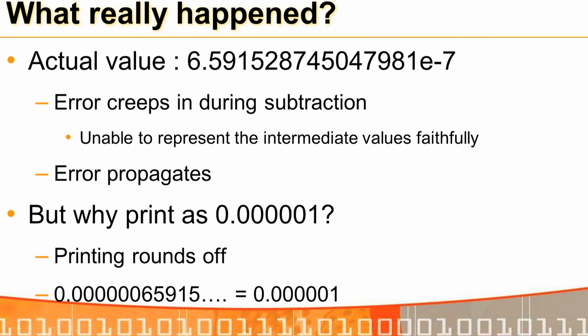Printf rounds the stored value: 0.06... rounds up to give 0.0000001. The intermediate values like 0.99, 0.98, etc. are not exactly representable in binary — not 0.999-something in decimal, but the binary representation is inexact, so errors accumulate across 100 subtractions.